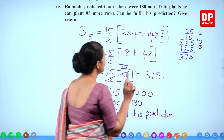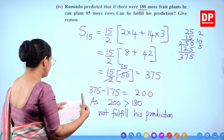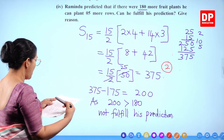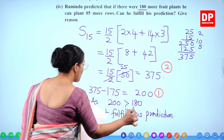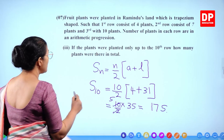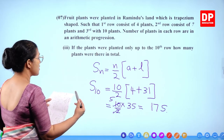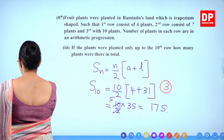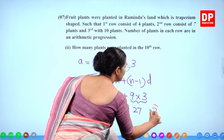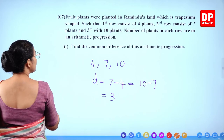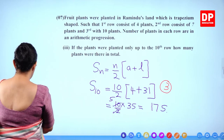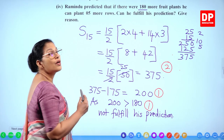For marks: 1 mark for common difference, 2 marks for the 10th term, 3 marks for the sum of 10 rows, 2 marks for total of 15 rows, 1 mark for the subtraction and conclusion — 10 marks altogether.